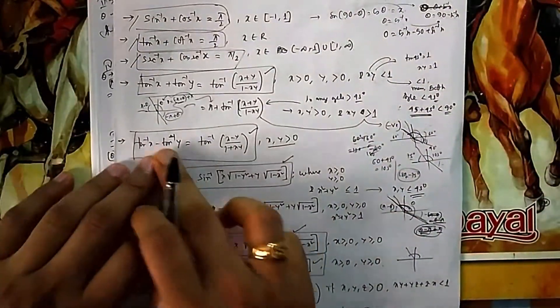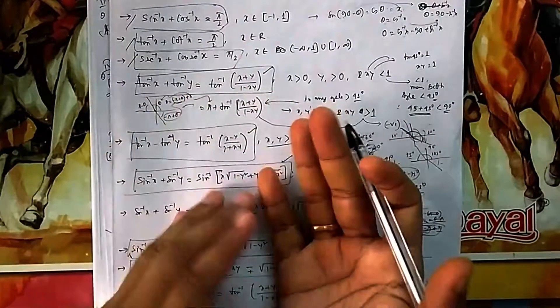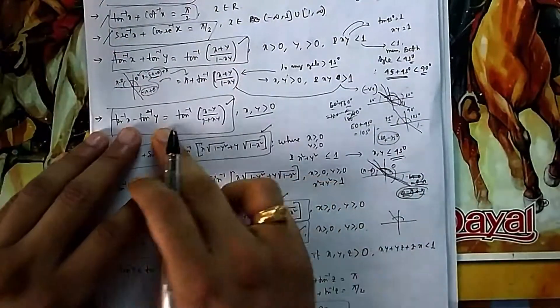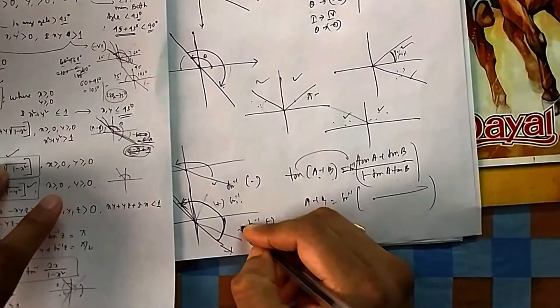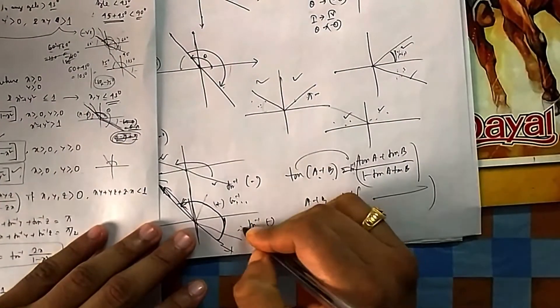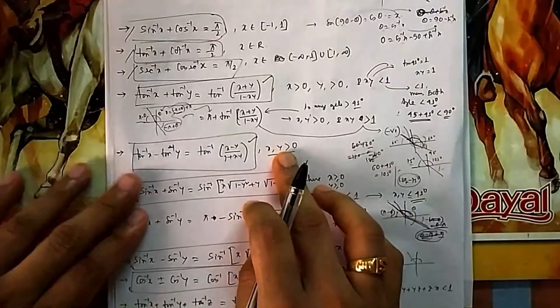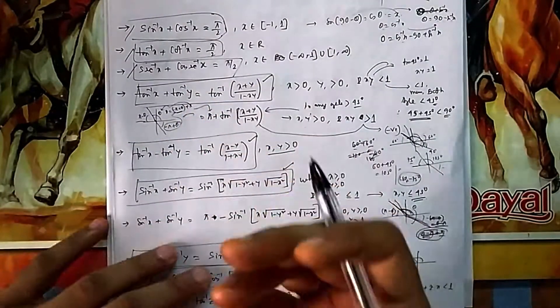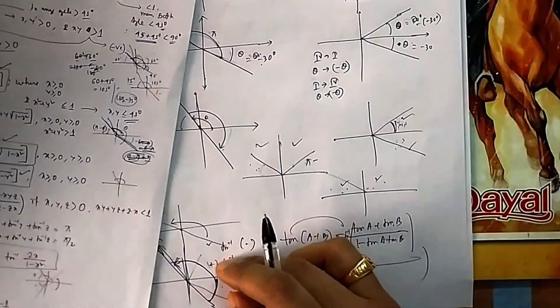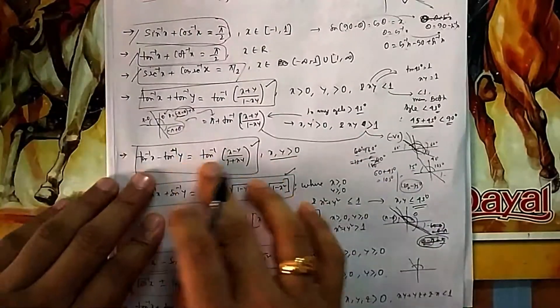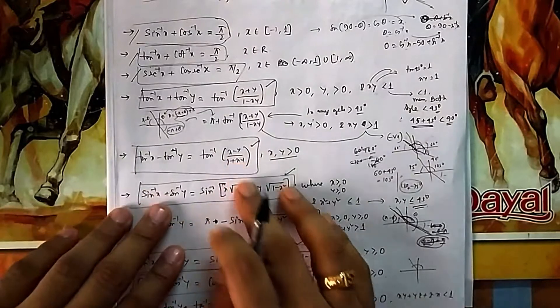For tan⁻¹x − tan⁻¹y, the difference formula, there is no such problem. The difference of two angles will either be positive or negative, and both remain within the tan⁻¹ range. Whether the result is positive or negative it stays in the tan⁻¹ zone. The formula is tan⁻¹((tan a − tan b)/(1 + tan a · tan b)).